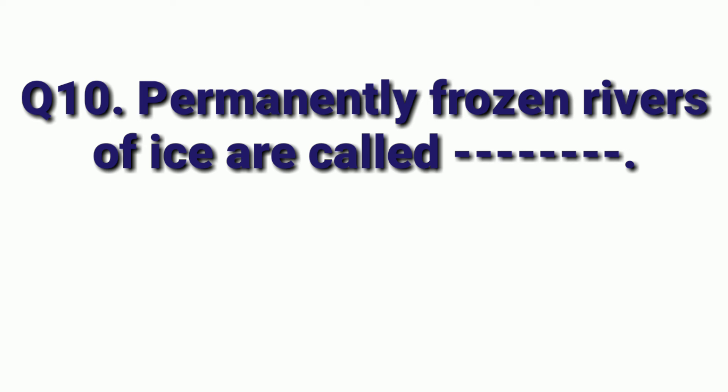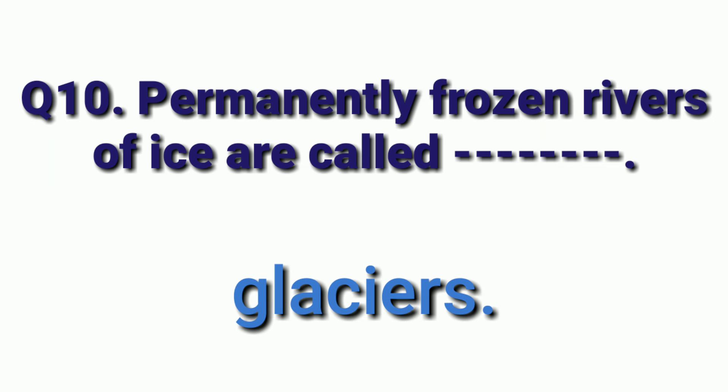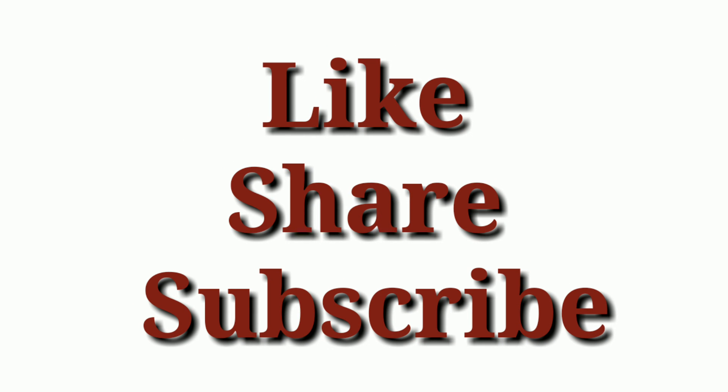Next question is: permanently frozen rivers of ice are called ___. Answer is glaciers. Frozen rivers of ice are glaciers.